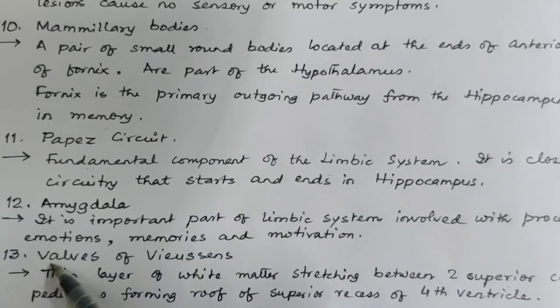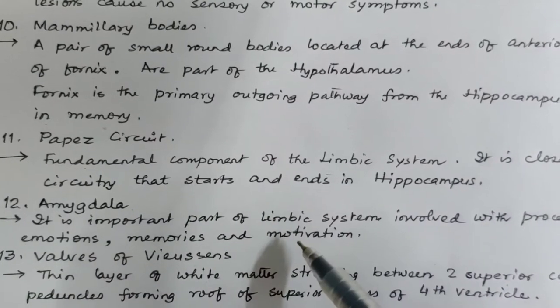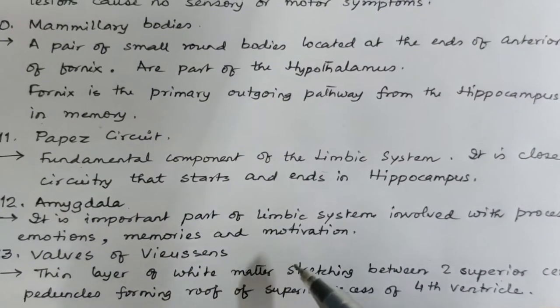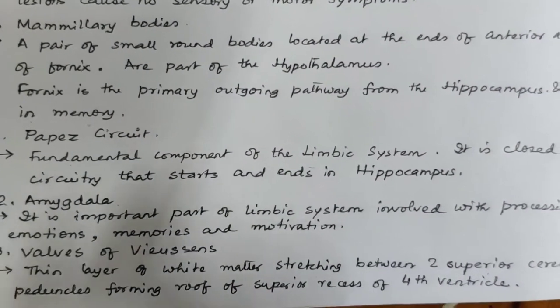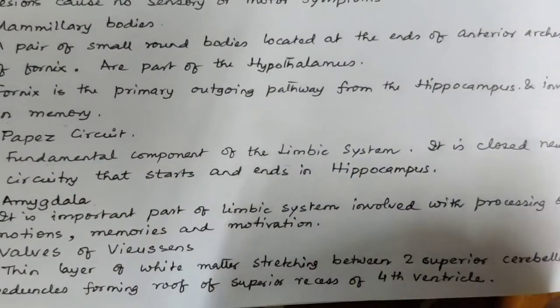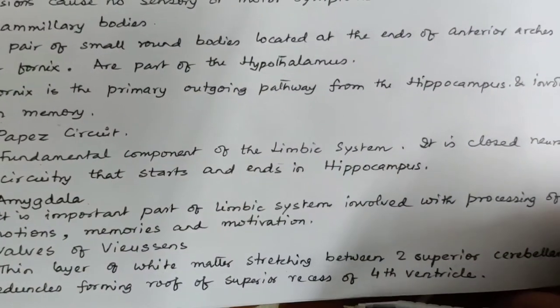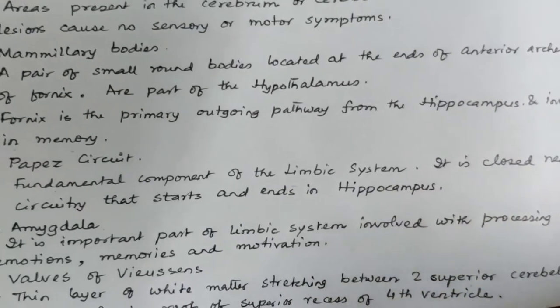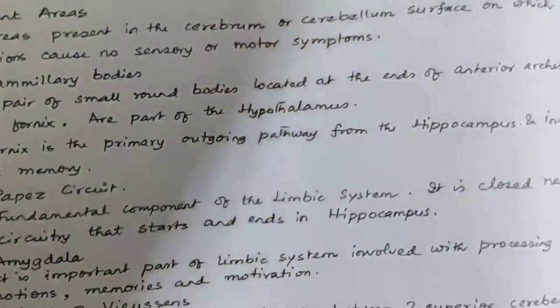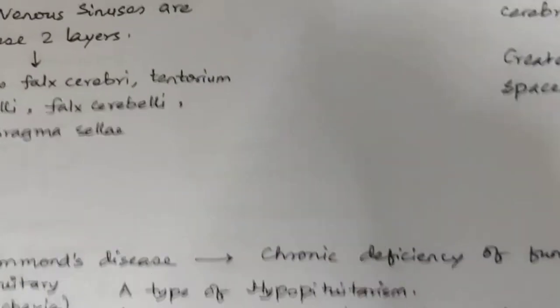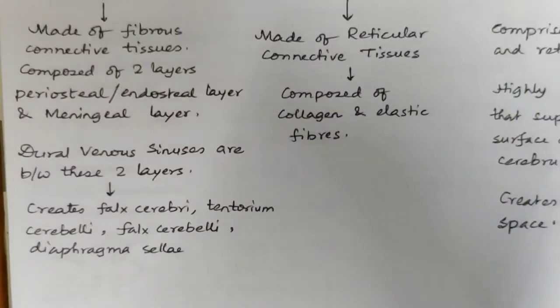What do you mean by the valve of Vieussens? This is a thin layer of white matter stretching between the two superior cerebellar peduncles, forming the roof of the superior recess of the fourth ventricle.